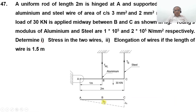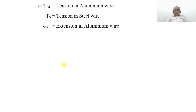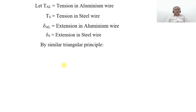The deflections at B and C are delta_AL and delta_AS. As the load is acting downwards, the deflection will be in the downward direction, shown by the dotted line. To keep this bar in equilibrium, there should be tension TAL in the aluminium wire acting upwards and tension TS in the steel wire also acting upwards. Let TAL be the tension in the aluminium wire and TS the tension in the steel wire. From the similar triangle principle, delta_AL by delta_AS equals 1 by 2.